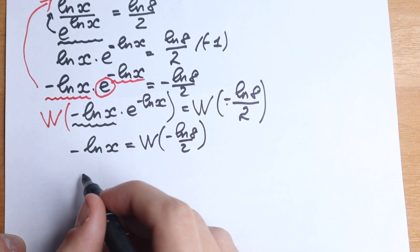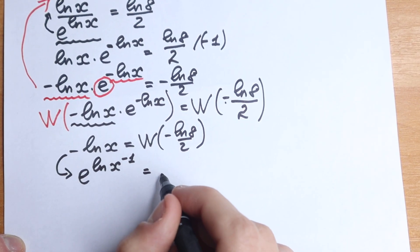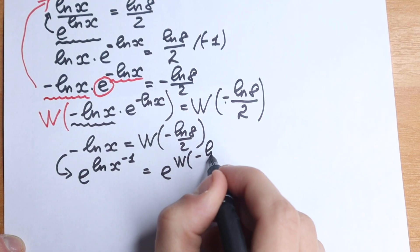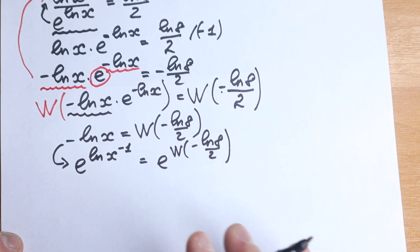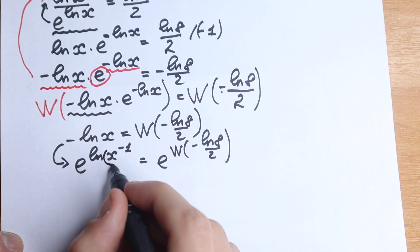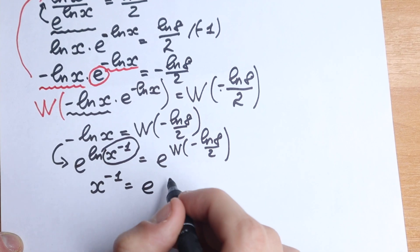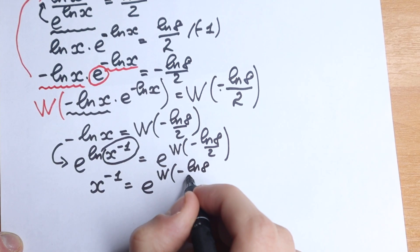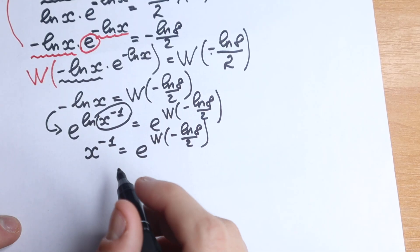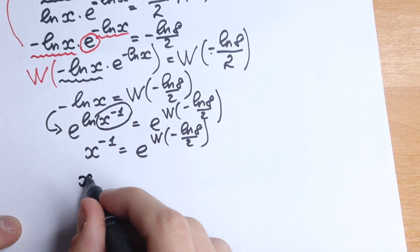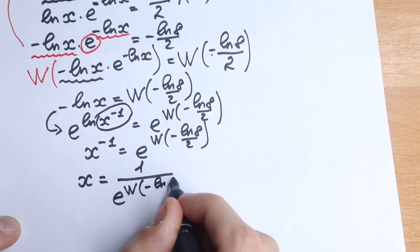Let's write minus natural log x as e to the power natural log x to the power minus 1, equal to e to the power of Lambert W of minus natural log 8 over 2. We take e on both sides. The natural log and e cancel on the left, leaving x to the power minus 1 equal to e to the power of W of minus natural log 8 over 2.